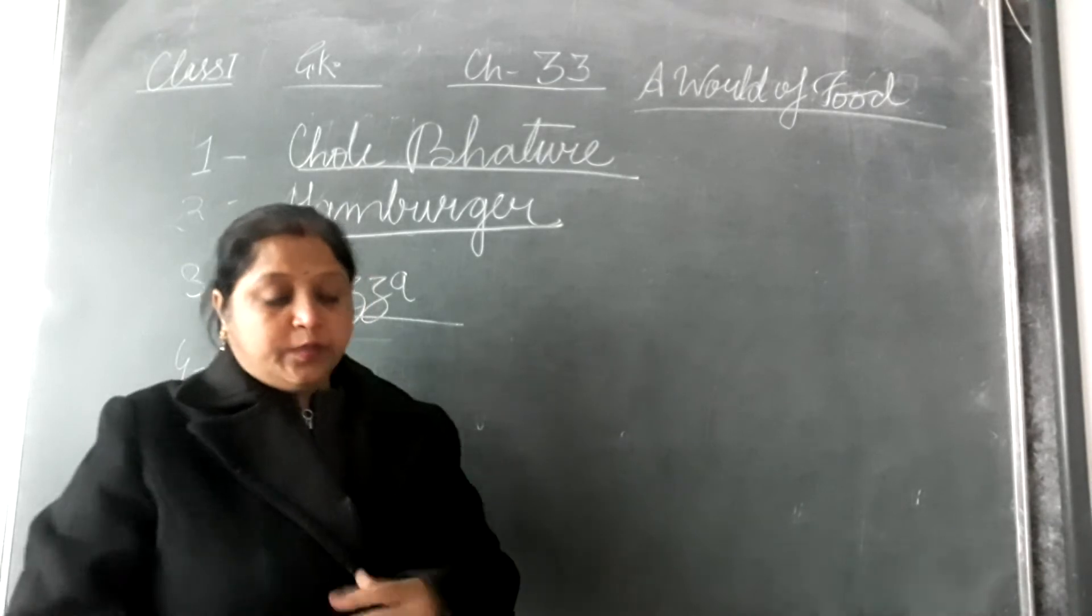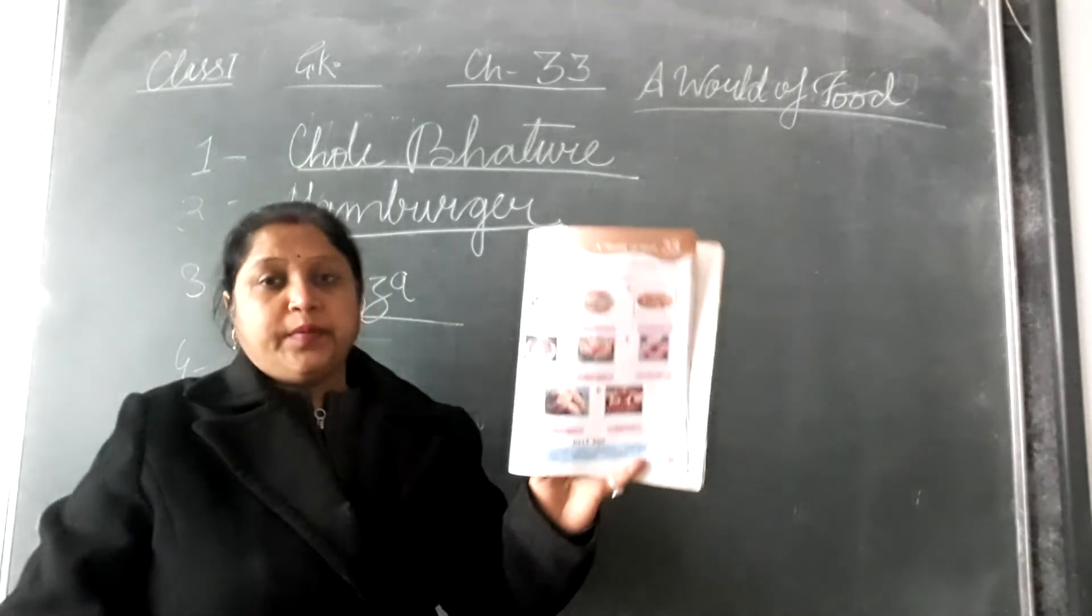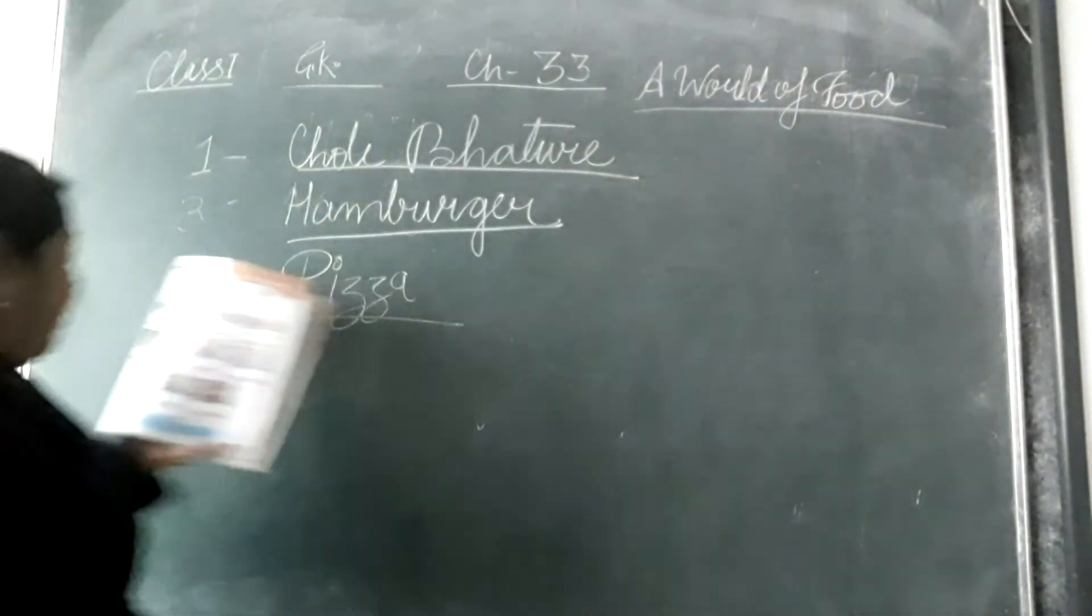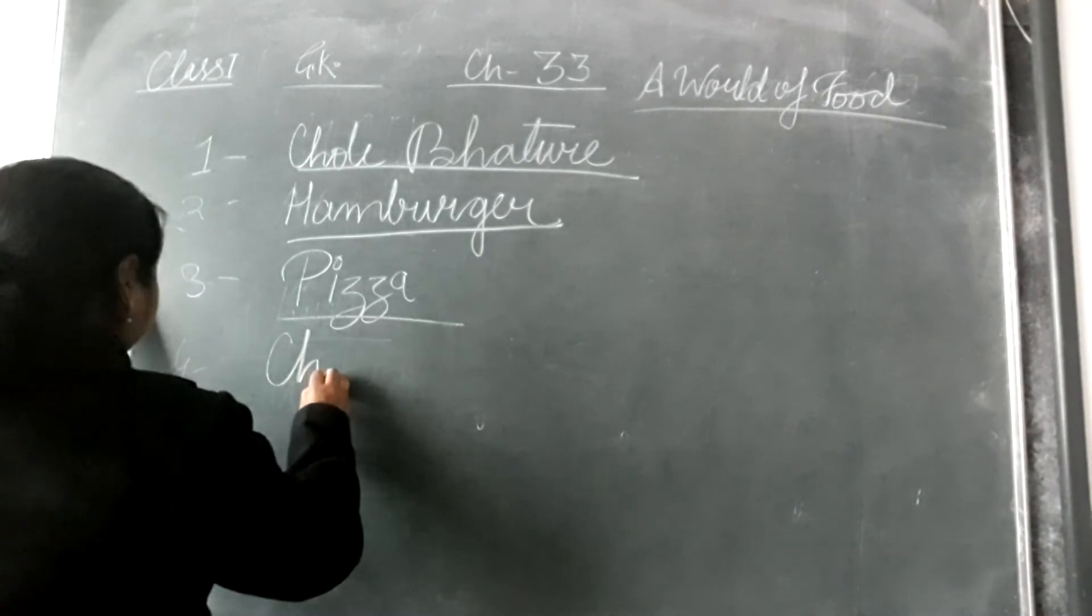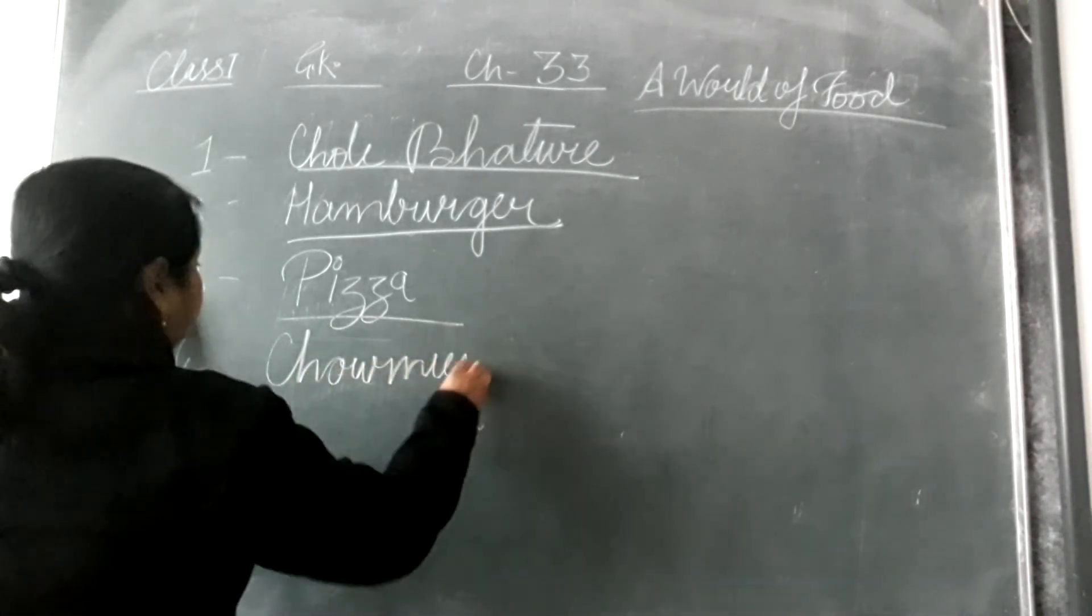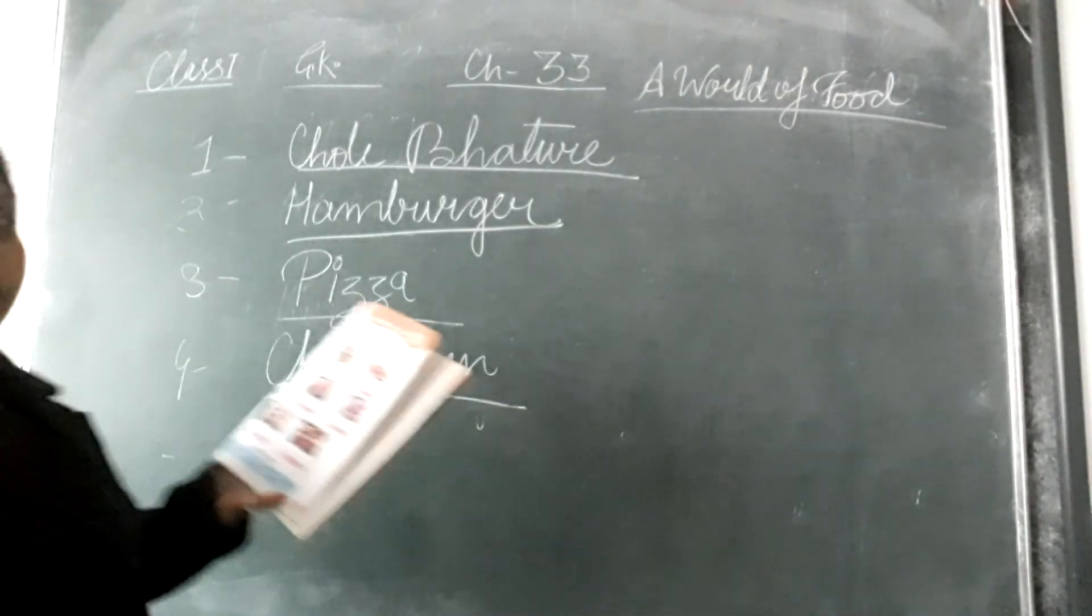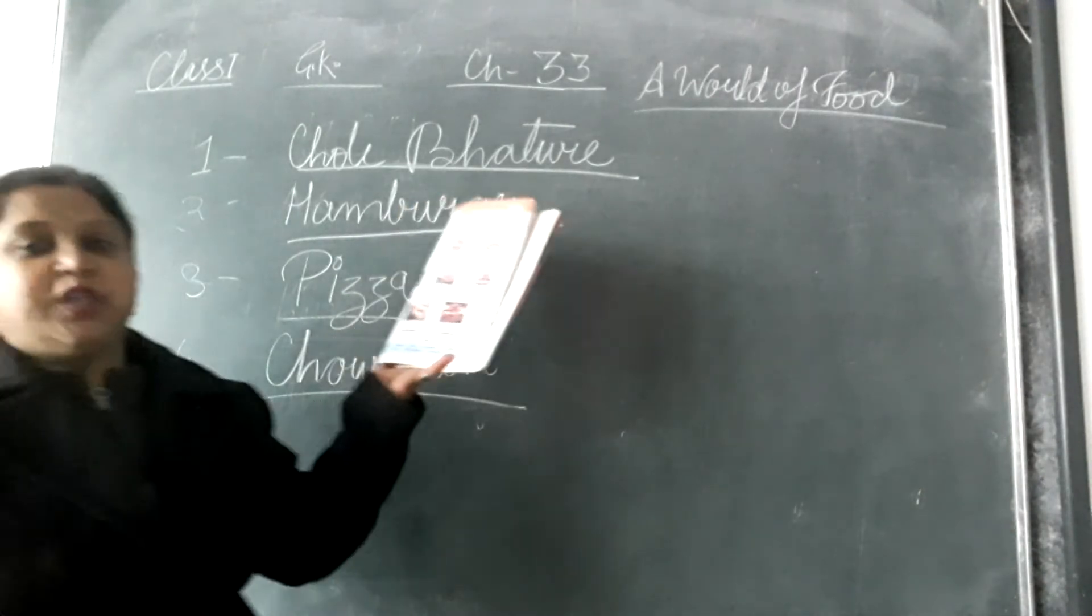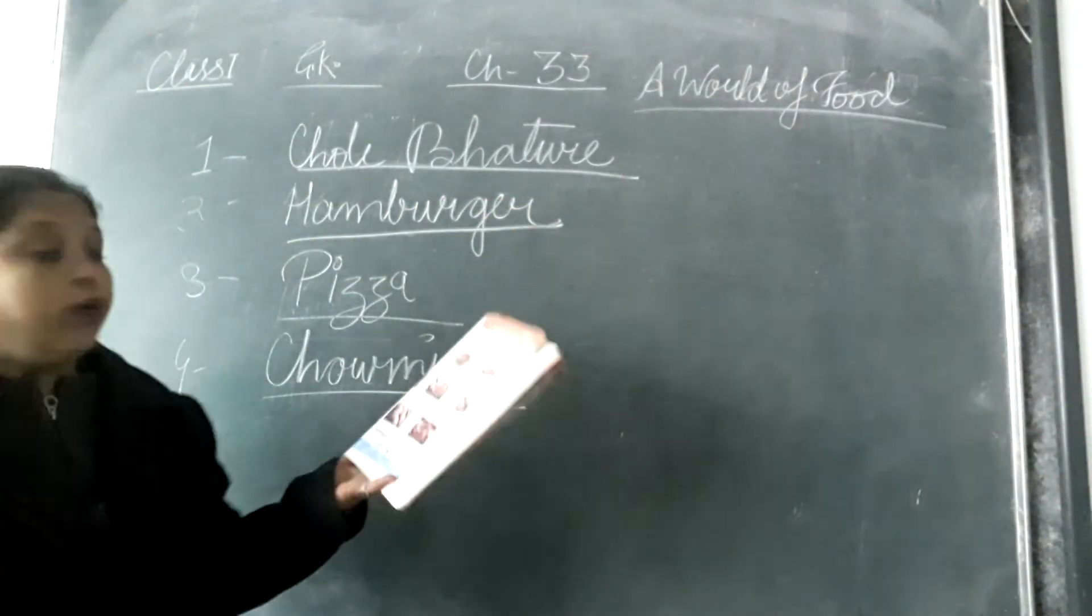Fourth picture, this is something you all love, I know. Chowmein from China. So the burger we eat, pizza, chowmein, this is not from India. Burger is from Germany, pizza from Italy, chowmein from China.